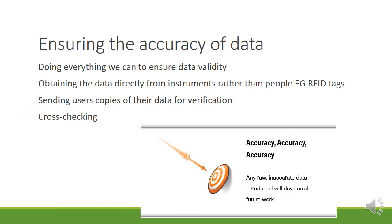To ensure the accuracy of data, we do everything we can to ensure data validity. We will rather try and obtain data directly from instruments rather than people — for example, RFID tags — and we will cross-check all the time. It's all about accuracy.